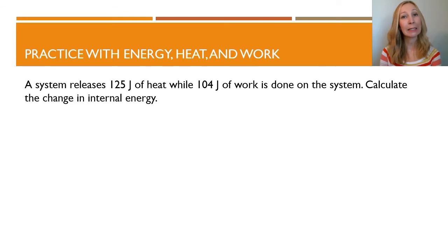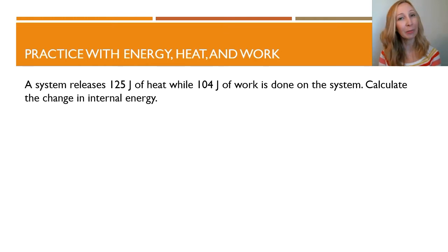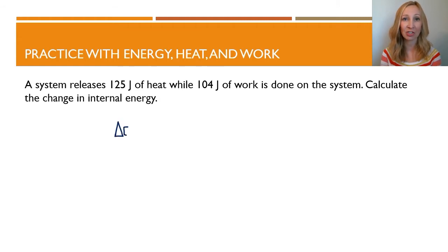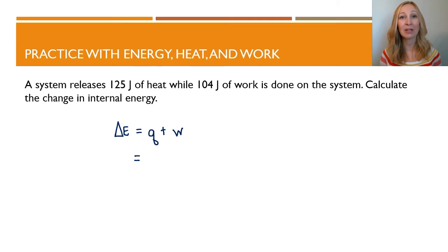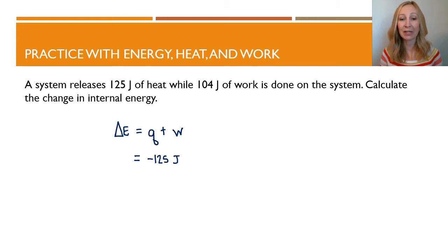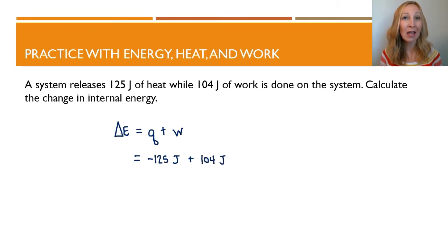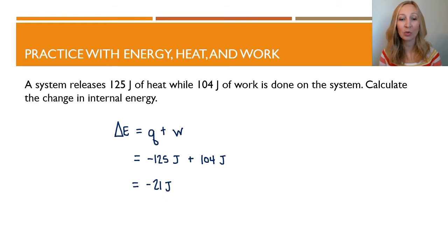Let's do a little practice with energy, heat, and work. If a system releases 125 joules of heat — an exothermic reaction — while 104 joules of work is done on the system, calculate the change in internal energy. Delta E equals Q plus W. The system is losing 125 joules of heat, so Q is negative 125 joules. Work is being done on the system, so W is positive 104 joules. Adding them: 104 plus negative 125 gives us negative 21 joules.